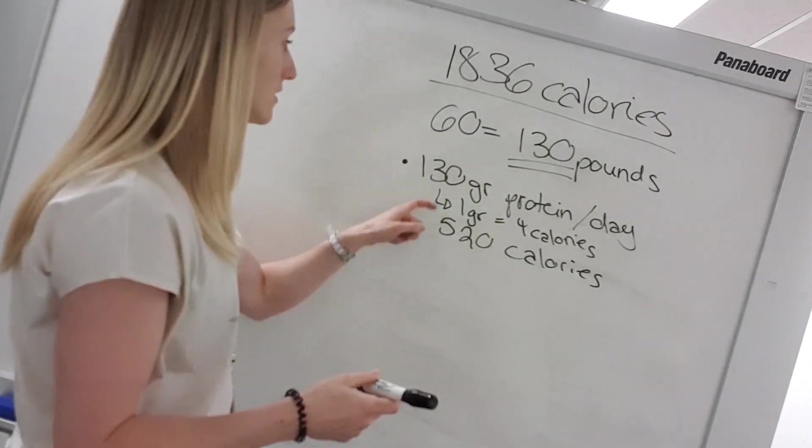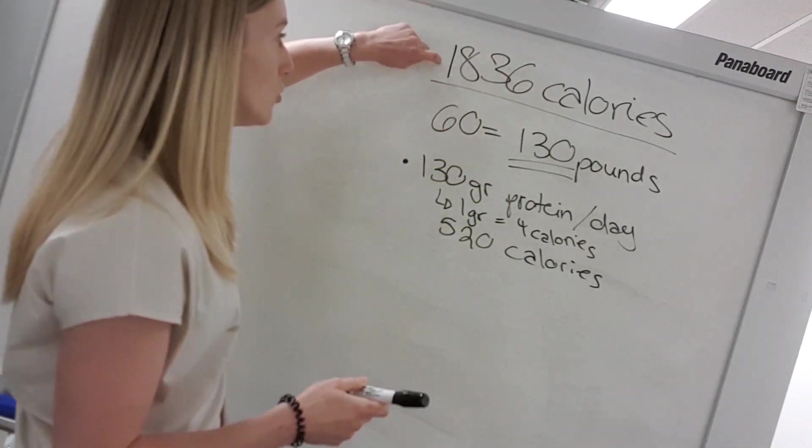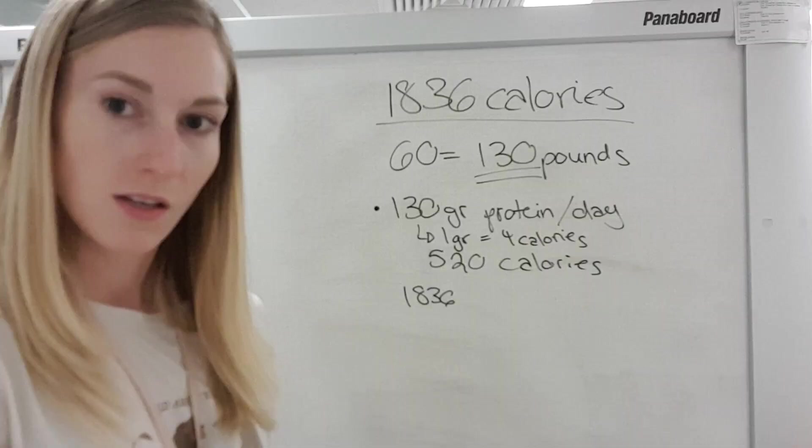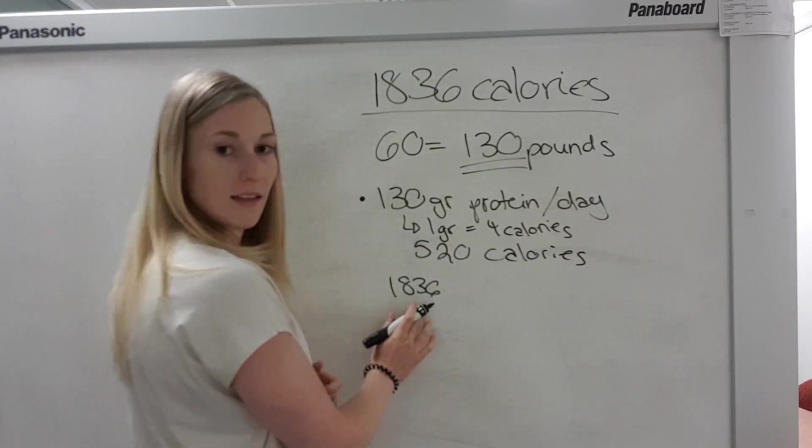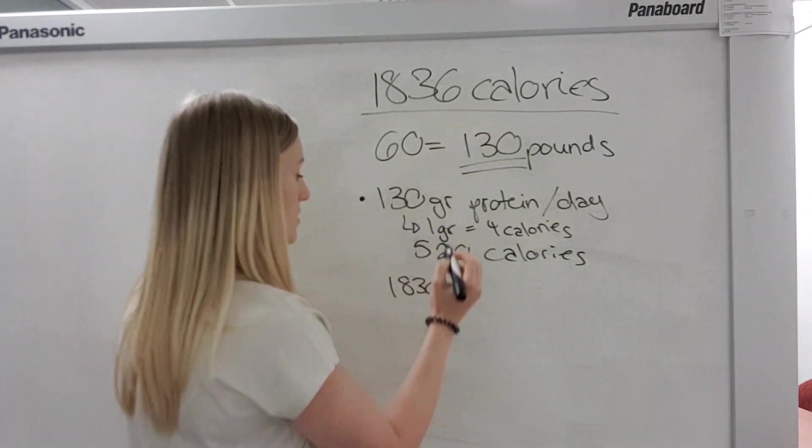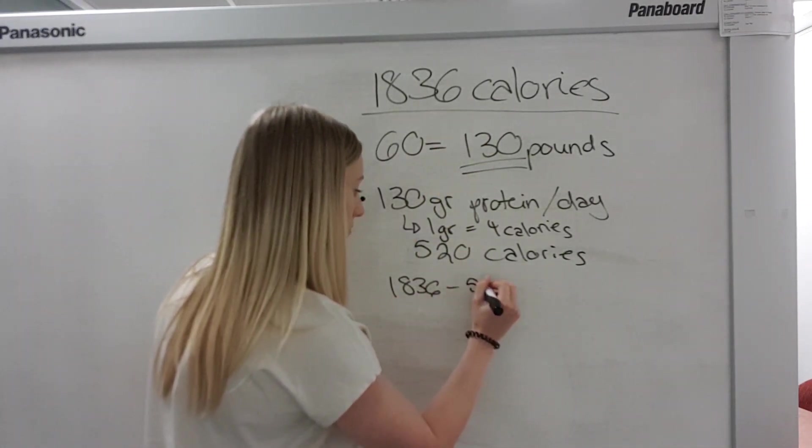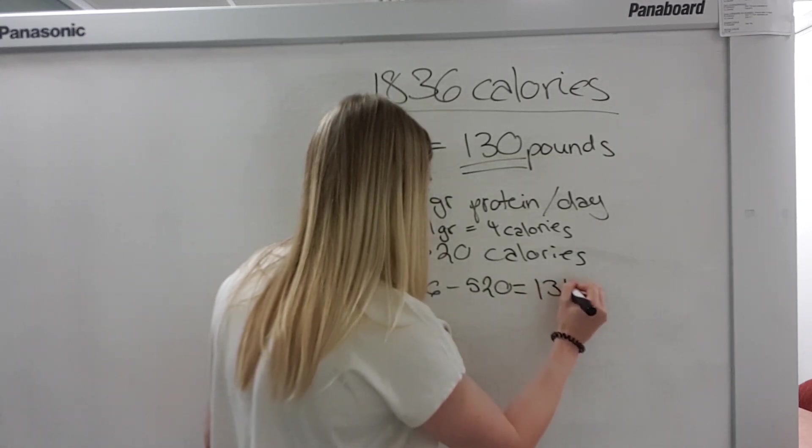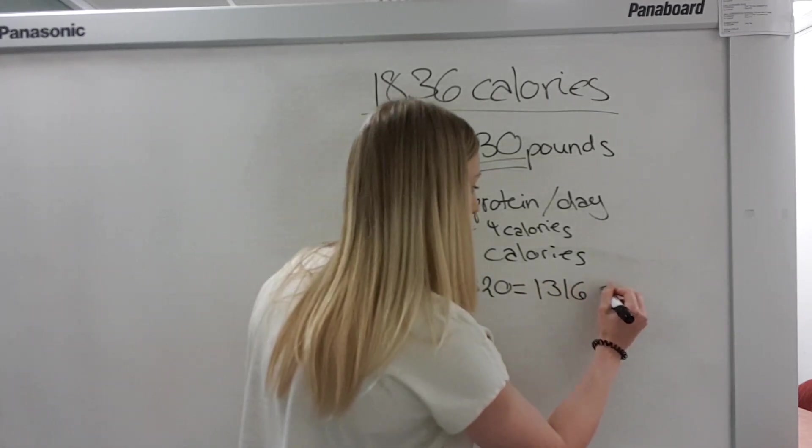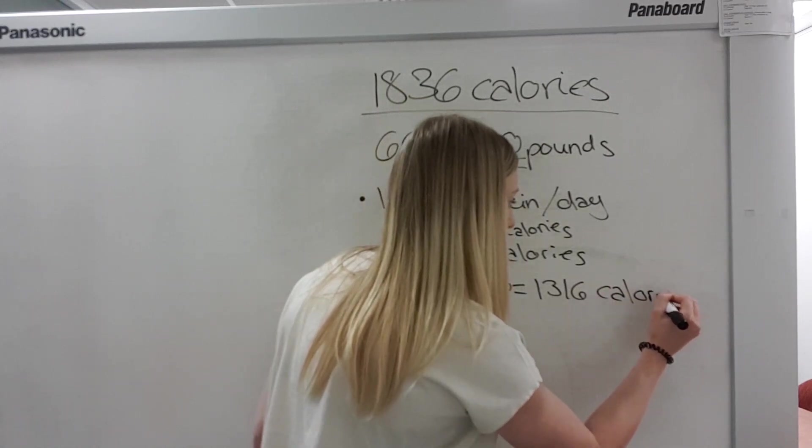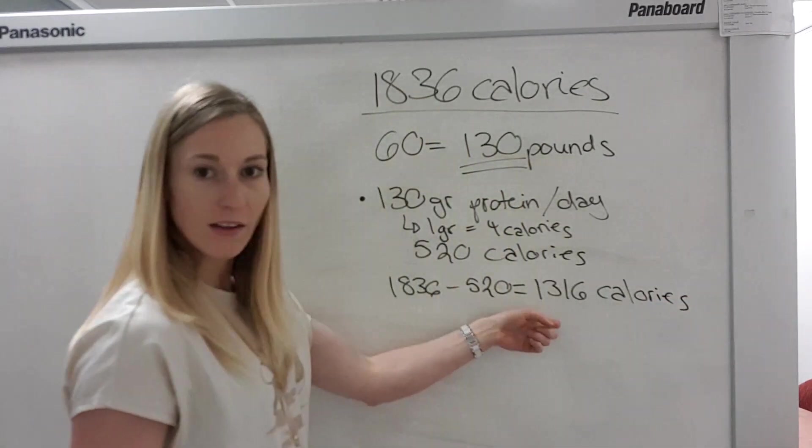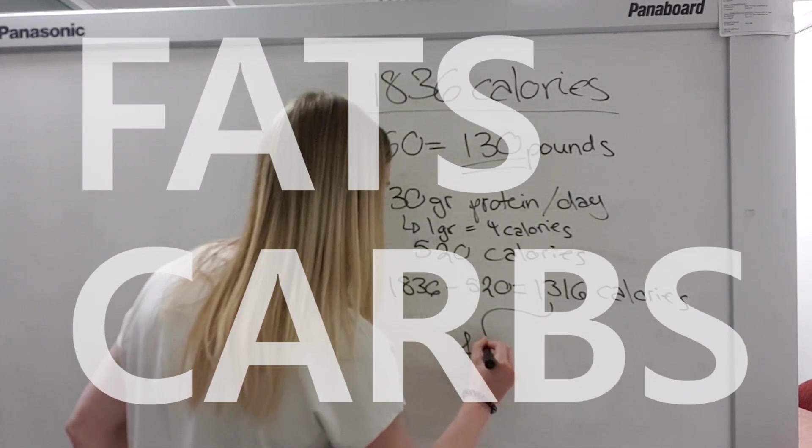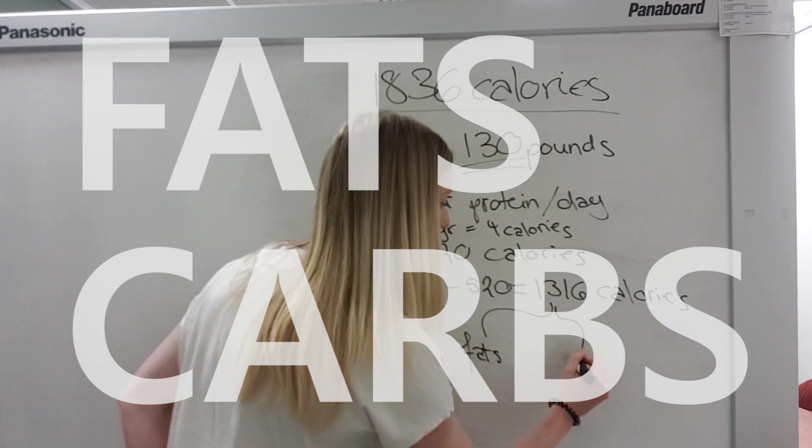So my 130 grams of protein per day equal to 520 calories. So now I can deduct that from my total amount. Oops, my phone is falling off. Put it back up, phone. So 1836 calories minus 520 equals 1,316 calories. That I have left, which I can fill with fats and carbs.